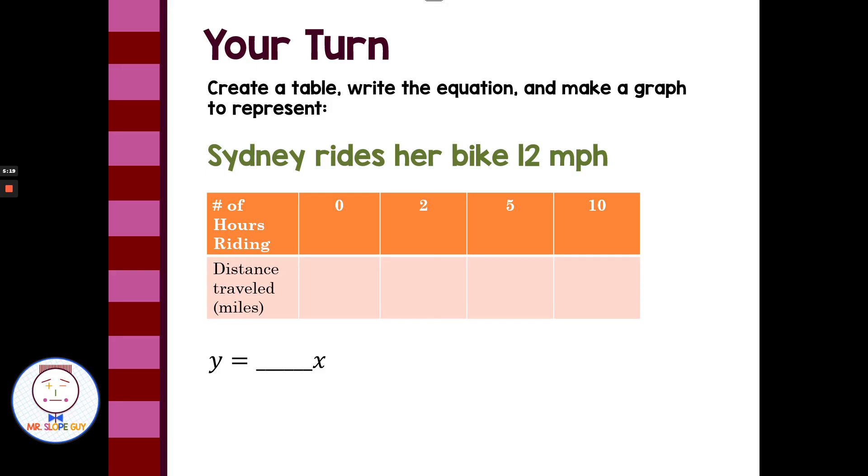In two hours, if Sydney rides her bike 12 miles per hour, she would have covered 24 miles of distance traveled. In five hours, 60 miles traveled. And in 10 hours, 120 miles. At zero time, she would be at zero miles. If I looked at my equation, well, the equation is pretty easy to take from Sydney rides 12 miles per hour. That is a unit rate, the rate of change, and it's 12 miles for every one hour. 12 over 1 would also be a good answer for our equation.